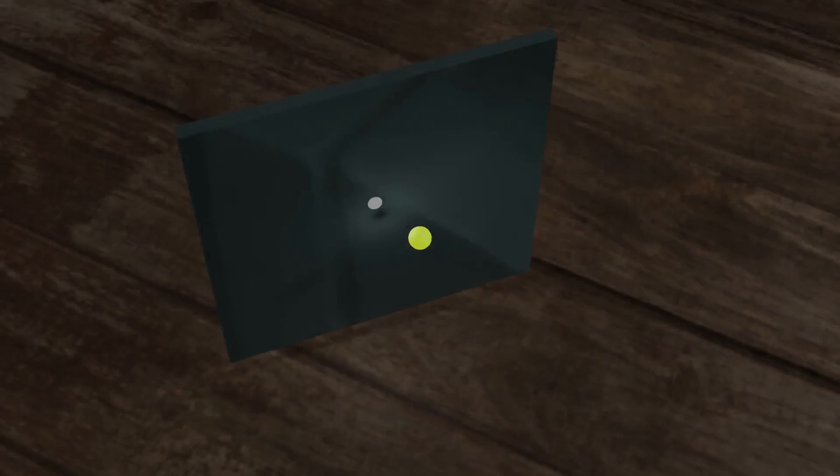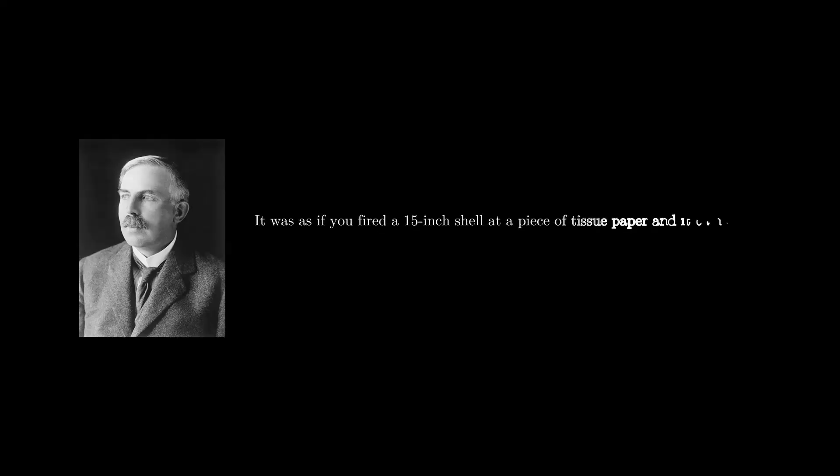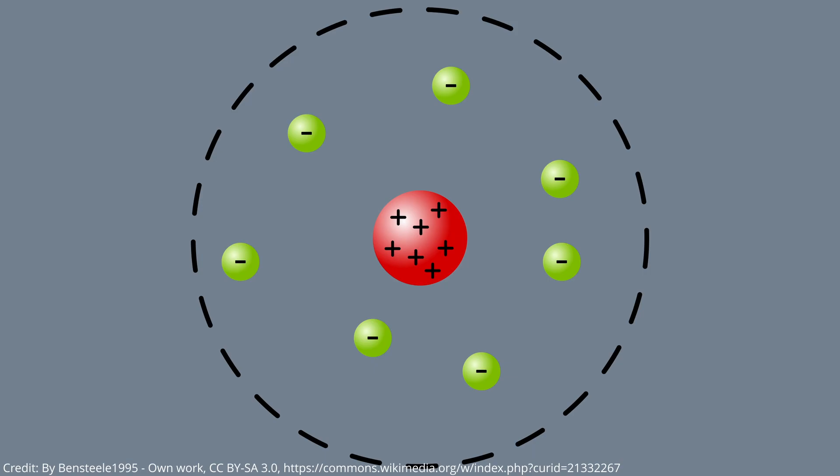Rutherford was quoted as saying: It was as if you fired a 15-inch shell at a piece of tissue paper, and it came right back and hit you. Ultimately, Rutherford deduced that this implied that the gold was made of a lumpy collection of heavy particles, heavy at least compared to the alpha particles, rather than a continuous material. With that, he suggested the basic solar system style model of atoms that we still use to this day as a first order approximation. And that was the discovery of the nucleus.